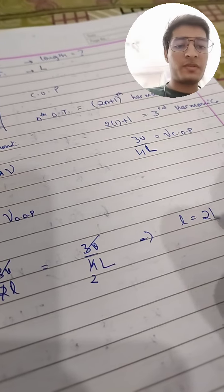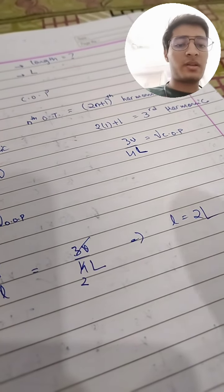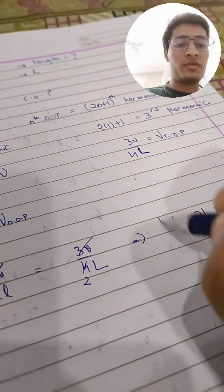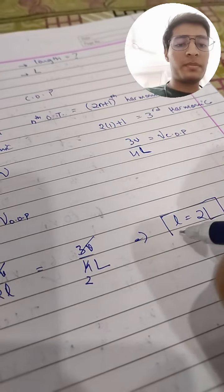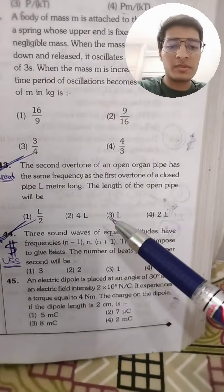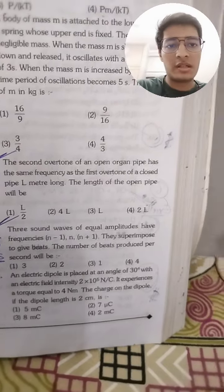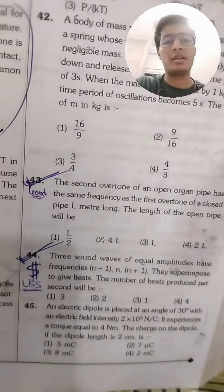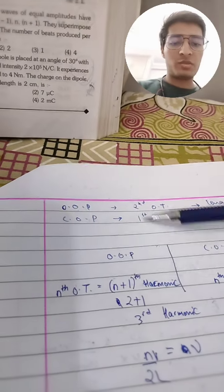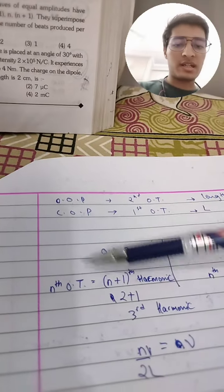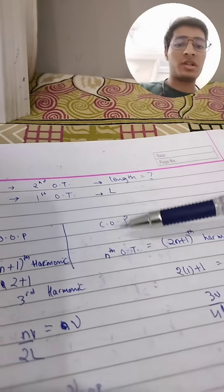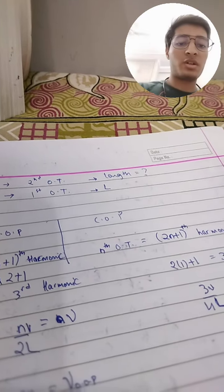So small l is equal to 2 times capital L. This is the required length of the open organ pipe, and option 4 (2L) is the answer. And if you want a proper derivation of how the nth overtone maps to the (n+1)th harmonic for open organ pipe and (2n+1)th harmonic for closed organ pipe, I will explain that in the next video.